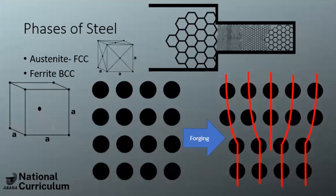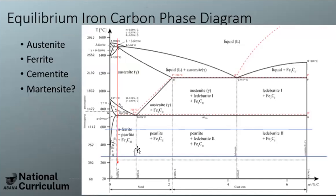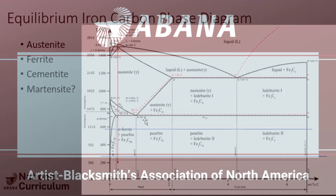Q: Does grain growth only occur when you're above the critical temperature? A: Yes, you have to be up in your austenite phase field — you have to have some austenite present. In the iron-carbon phase diagram, that's above 723°C, this horizontal line. There's some austenite present above that temperature. Grain growth occurs when you're somewhere above that temperature.